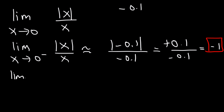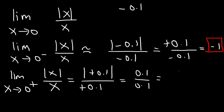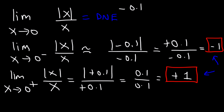Now what about the right side? Let's try plugging in positive 0.1. The absolute value of positive 0.1 remains positive 0.1, and 0.1 divided by 0.1 is positive 1. So that's the right-side limit. Because the left side and the right side are not the same, therefore this limit does not exist. So that is the answer.